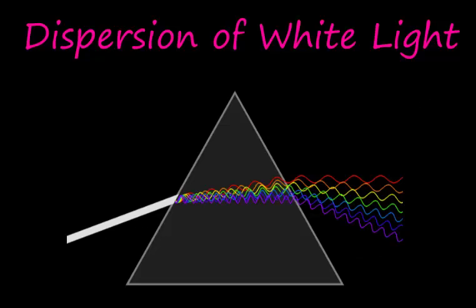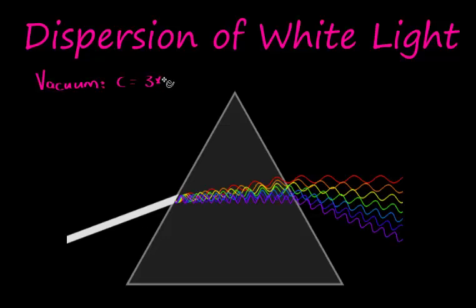Why does this happen? Why, when light is shone at an angle into a triangular prism, does it break up into different wavelengths and disperse even more when it comes out, eventually showing the color spectrum on a canvas or light screen? Well, when light travels in a vacuum, the speed of light is given by the constant C, equal to 3 times 10 to the power of 8 meters per second.